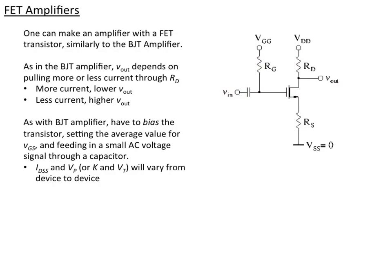So when we're biasing the transistor, we have to take into account the things that vary, just like in the bipolar junction case. And in the case here, with a depletion mode MOSFET or with a JFET, IDSS, the full current that can flow through, or the pinch voltage, those vary from transistor to transistor even in the same batch. Likewise, if we have an enhancement mode JFET, K and the threshold voltage will change.